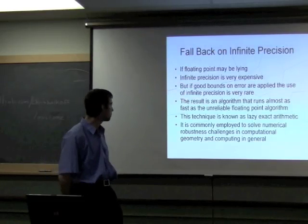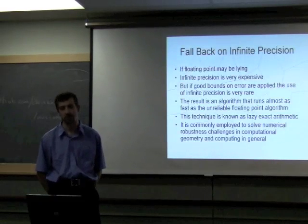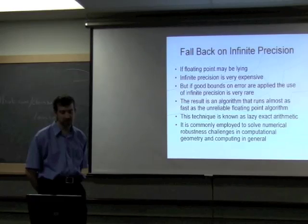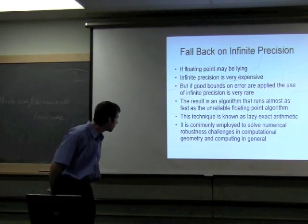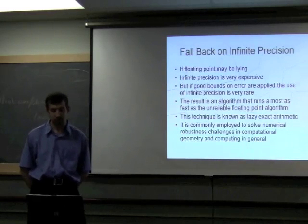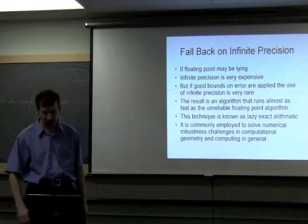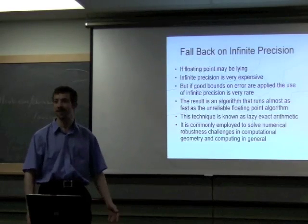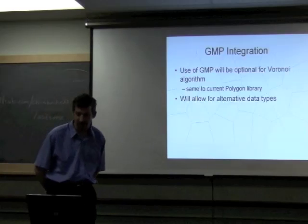Once you know using the floating point accumulation of relative error that you don't trust the result, you can fall back on infinite precision. Infinite precision arithmetic is very expensive, but if you have good bounds on error, it should be very rare that you actually have to use it. The result is an algorithm that runs almost as fast as if you didn't use infinite precision, but it's actually correct. This is called lazy exact arithmetic, and it's commonly employed in computational geometry to deal with numerical robustness problems. But that's just still only the start.